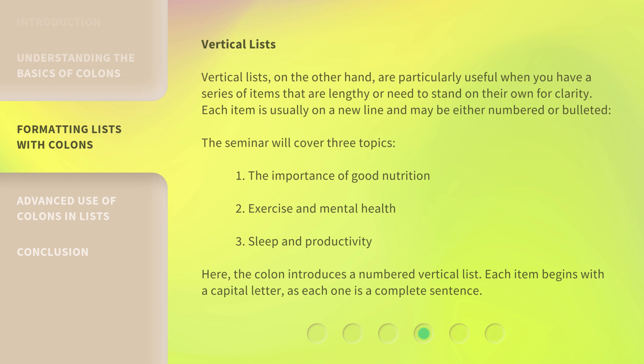3. Sleep and productivity. Here, the colon introduces a numbered vertical list. Each item begins with a capital letter, as each one is a complete sentence.